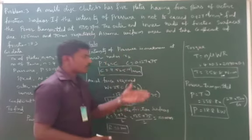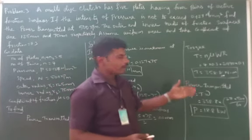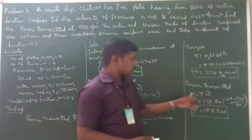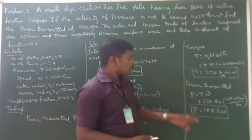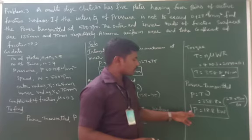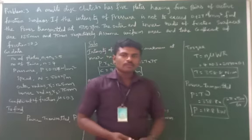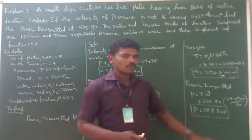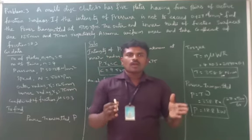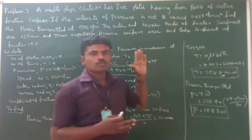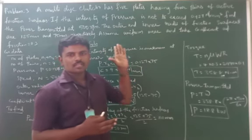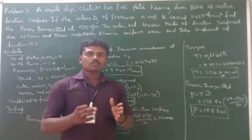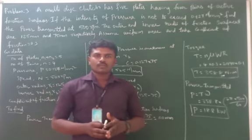After finding the value of torque, we substitute the torque value and angular velocity value into the power transmitted equation and find the value of power transmitted. The value of power transmitted will be 18.8 kilowatt. In this class I taught you about one of the most important multi-disc clutch problems. In the next class I will teach you about one of the most important centrifugal clutch problems. Thank you.